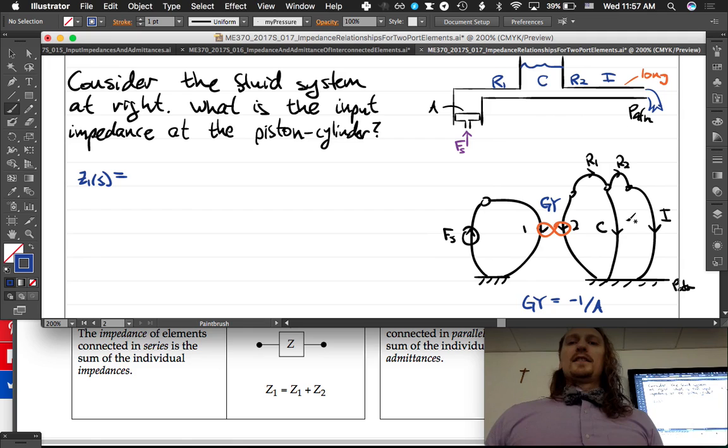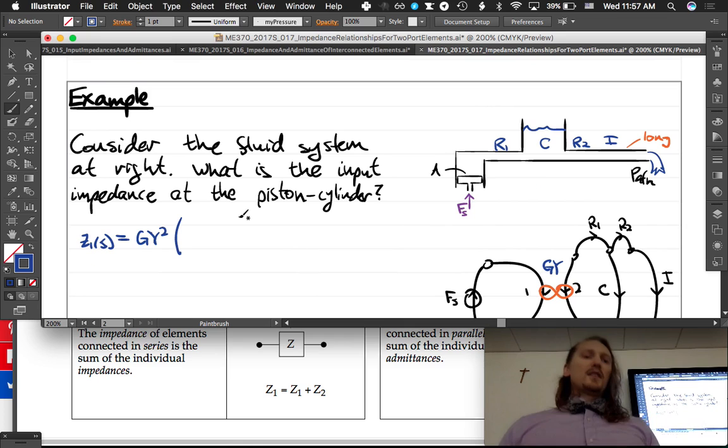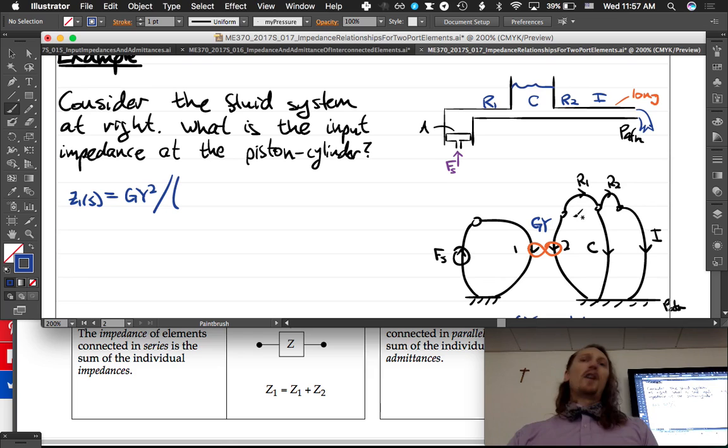So we know from our formula above, so this formula right here, is GY squared times, or divided by Z3, right? GY squared, or times the admittance. So I'll just write a big slash, over, and big parentheses, over, and the impedance of everything over here, right? Impedance of all of this stuff.